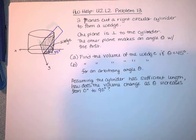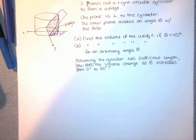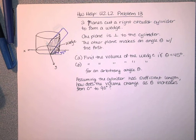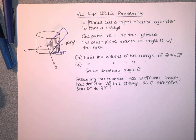In this video I'm going to help you with a homework problem. This is one a couple of people have asked about. It says two planes cut a right circular cylinder to form a wedge.